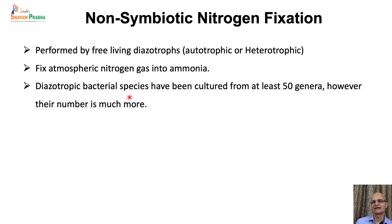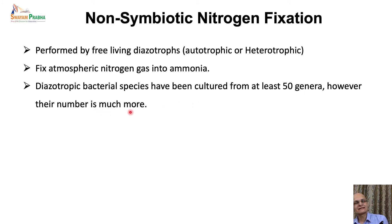Diazotrophic bacteria from at least 50 genera have been cultured successfully. However, this is just the tip of the iceberg and their actual number is much more — there exists a great diversity of free-living microorganisms capable of fixing nitrogen that have not yet been identified.